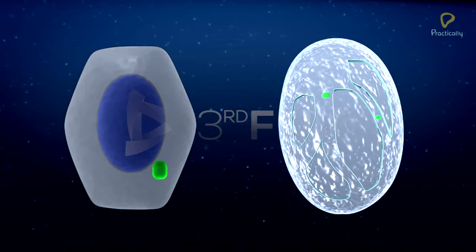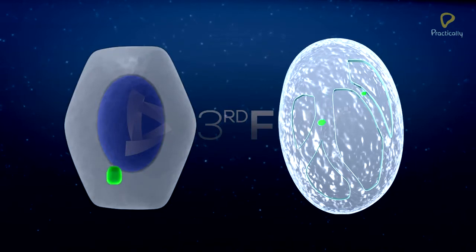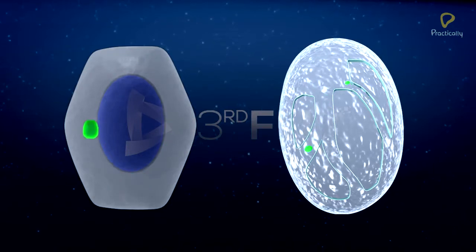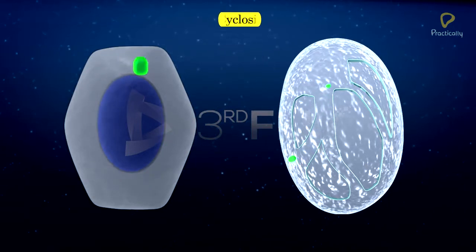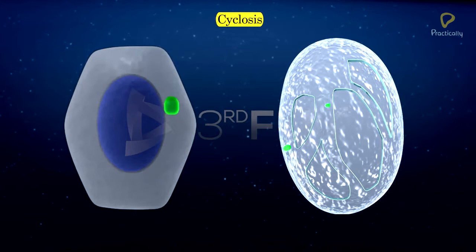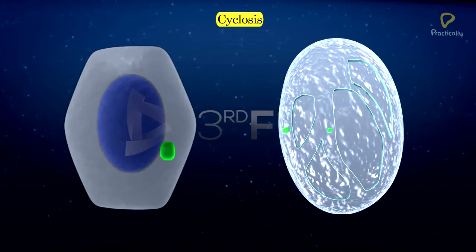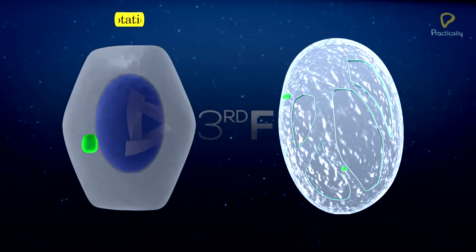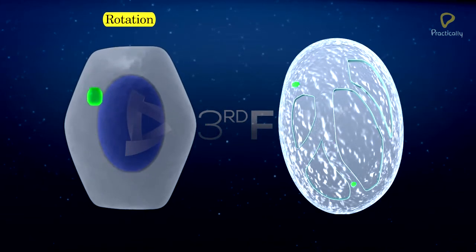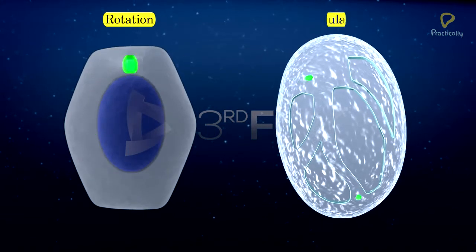Intracellular movement of the cytoplasmic matrix in the cell is called cyclosis. It is of two types: rotation and circulation.